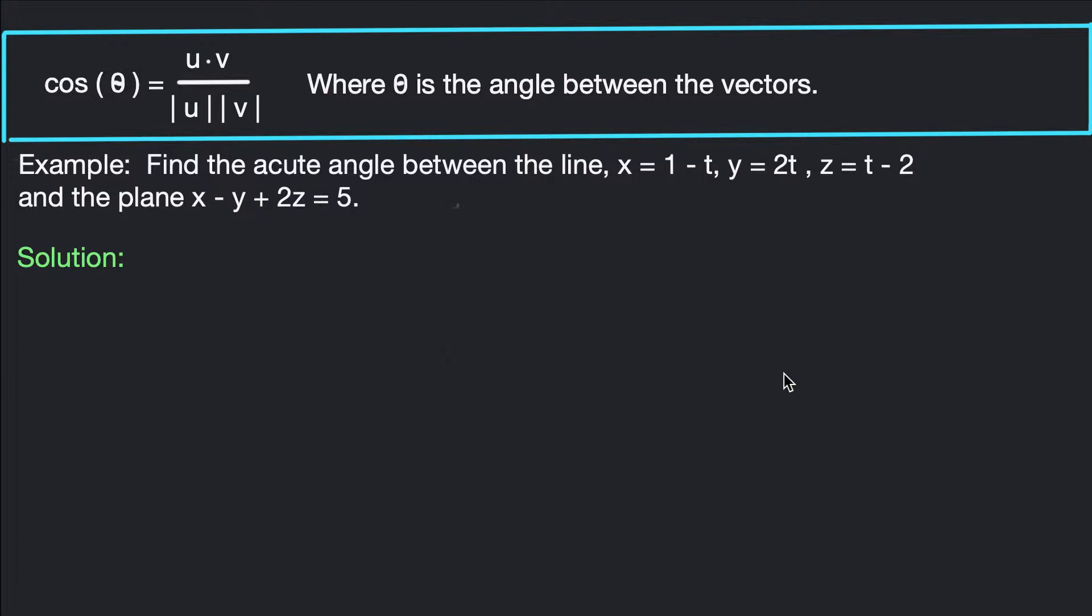Now a line and a plane could possibly be parallel or they're going to intersect at some point. Now we're not too worried about where they intersect in this example, but we are wanting to find the angle between them. So let's look at the visualization in 3D first of all.